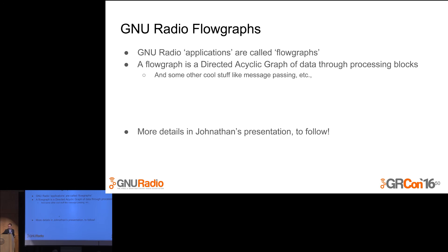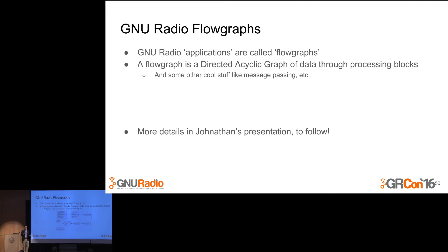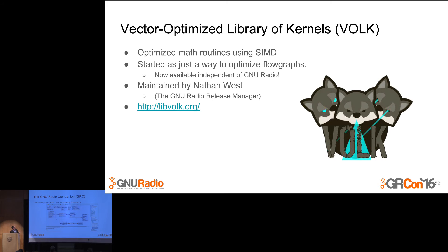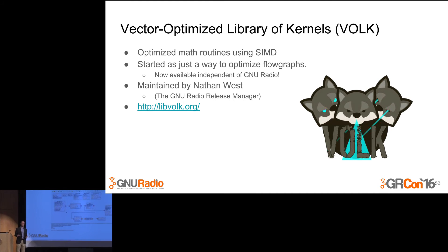Jonathan Corgan has technical details in his presentation about how this works. The key thing to understand is that when you write a GNU Radio application, what you're creating is a flow graph — that's the language we use. In order to create flow graphs, we have something called the GNU Radio Companion, probably the tool most commonly used by any GNU Radio developer. You drag and drop blocks, connect them, put together your flow graph, click run, and everything goes.